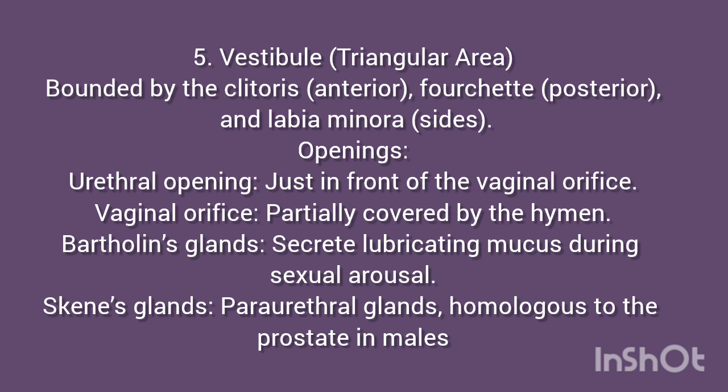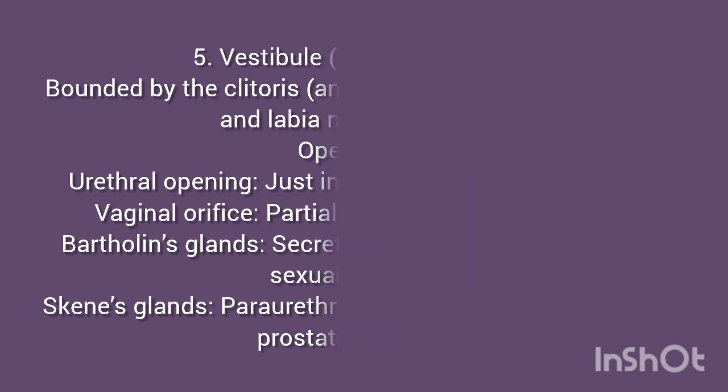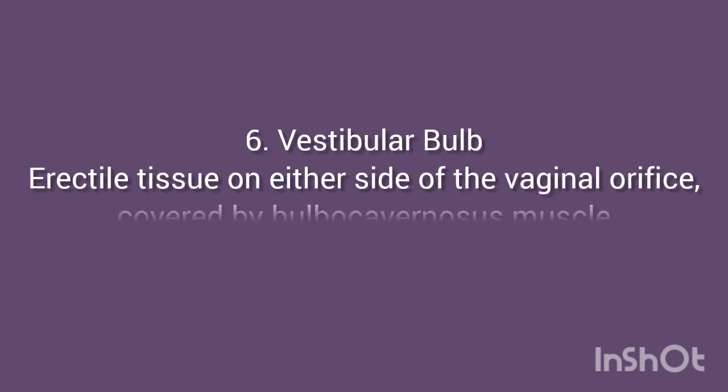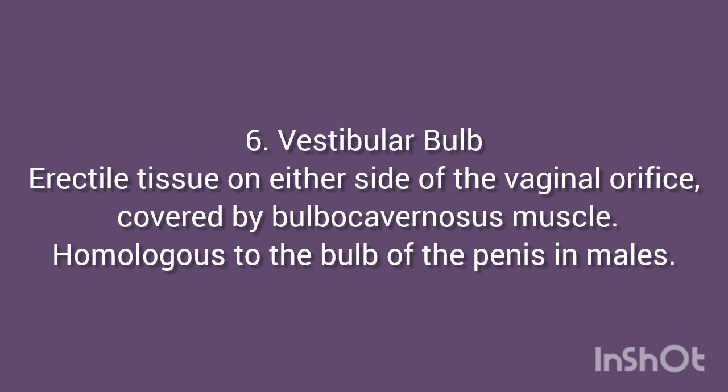Bartholin's glands secrete lubricating mucus during sexual arousal. Skene's glands (paraurethral glands) are homologous to the prostate in males. 6. Vestibular bulb: Erectile tissue on either side of the vaginal orifice, covered by the bulbocavernosus muscle. Homologous to the bulb of the penis in males.